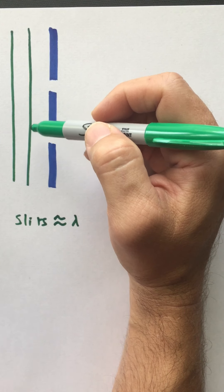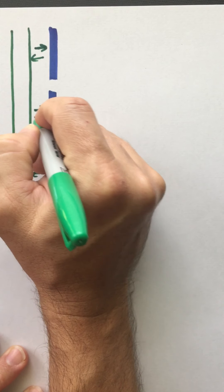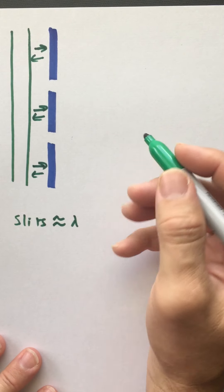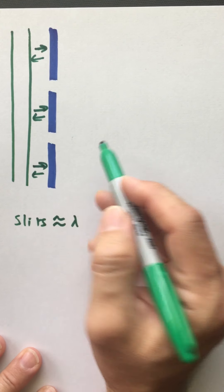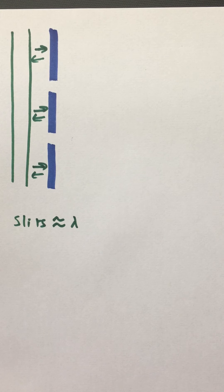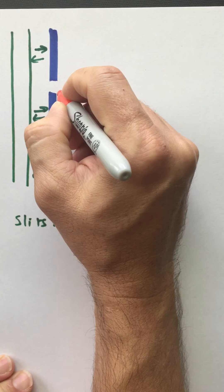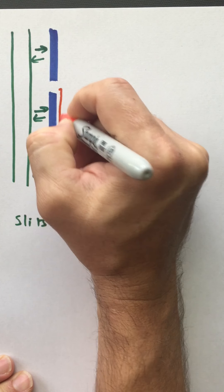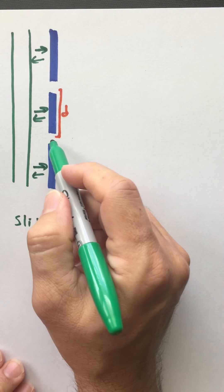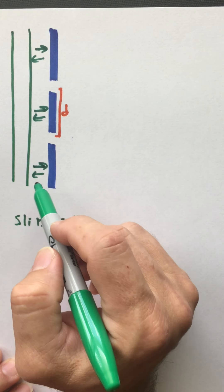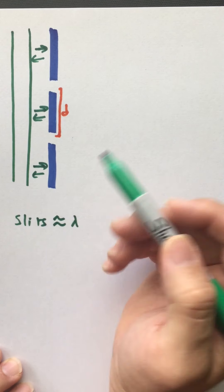Up here the waves are going to hit the barrier and bounce off — I get reflection. Same down here, same here. Although I'm going to allow the waves that come through the slits to propagate onto the other side. One thing I forgot to mention: there is a characteristic distance here. The distance between the slits I'm going to call d, so these slits are a distance d apart.